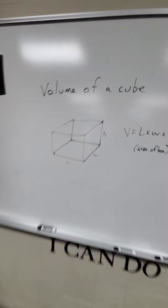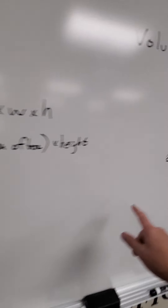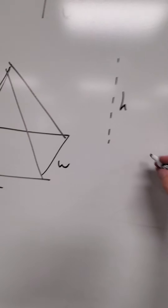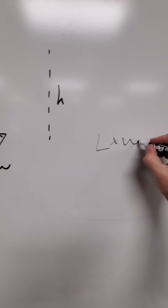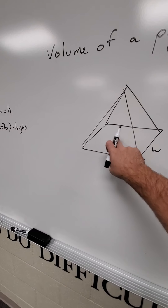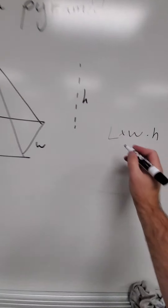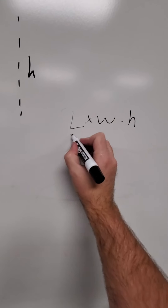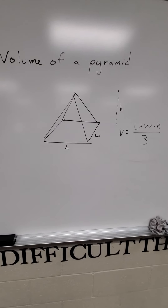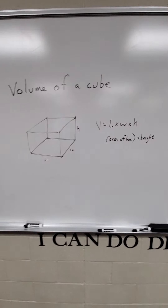So, therefore, if the volume of the cube is length times width times height, then the volume of a pyramid is also going to be length times width times height. But, however, how many pyramids fit inside of that cube? One, two, three of them. So: length times width times height divided by three. The volume of a pyramid is length times width times height divided by three, because three pyramids fit inside of one cube.